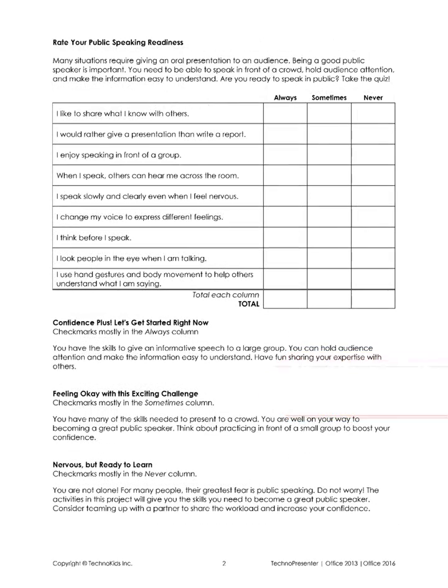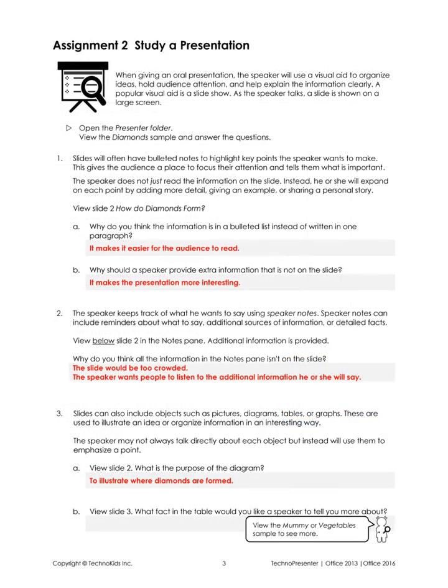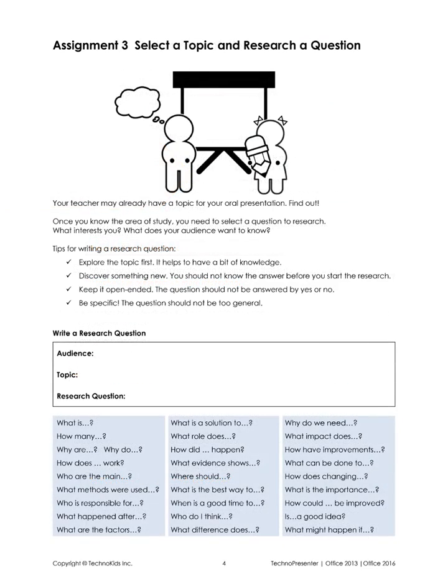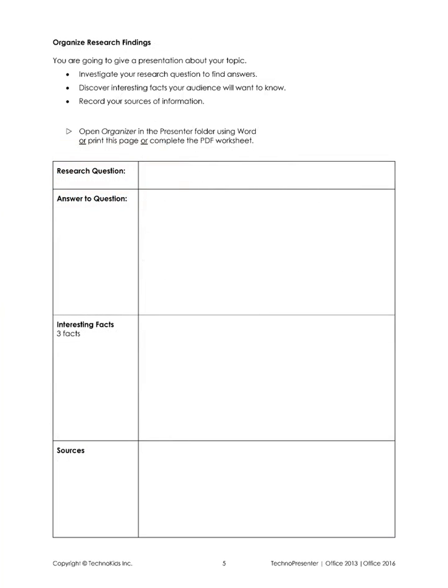Depending on the lesson, TechnoKids will include checklists or options for evaluation before moving on to the next assignment. The teacher guide includes answers to questions, so it can be used as a marking sheet. We include storyboard or outline helpers that assist the student in planning out their work. Tips and suggestions help guide students in various stages of the project, and planners ensure students are on task and stay organized.